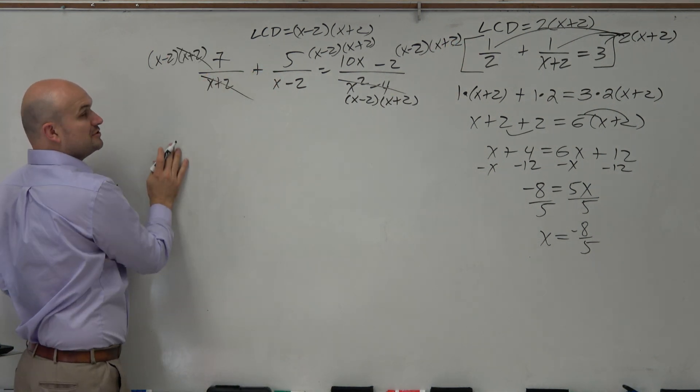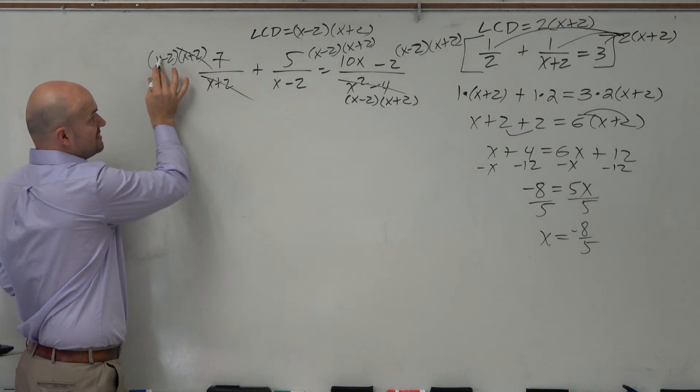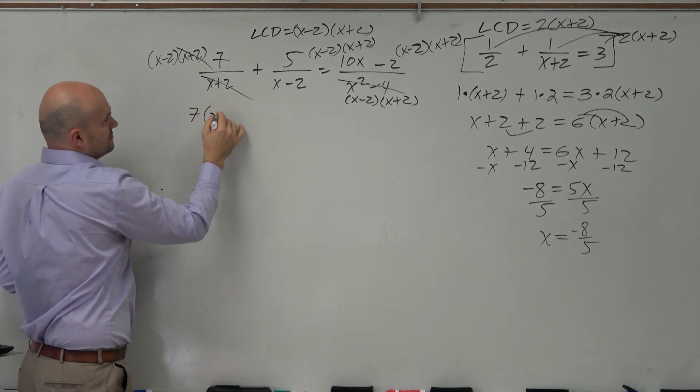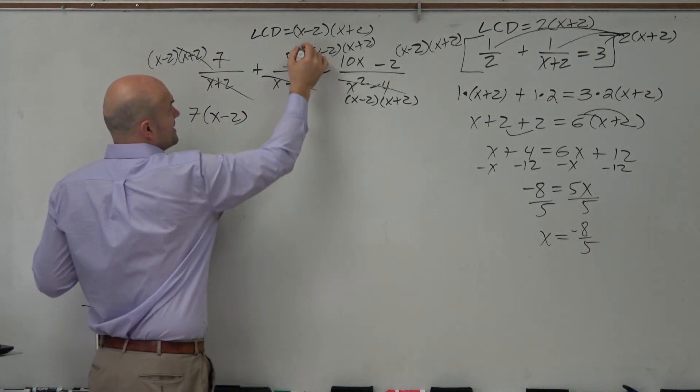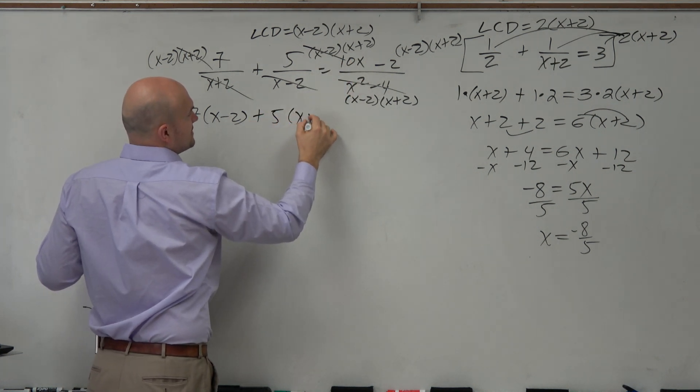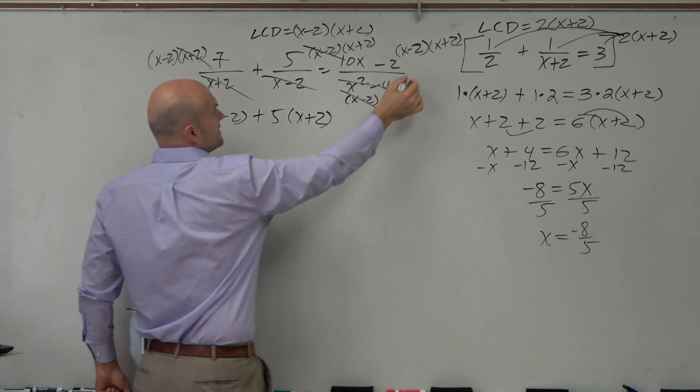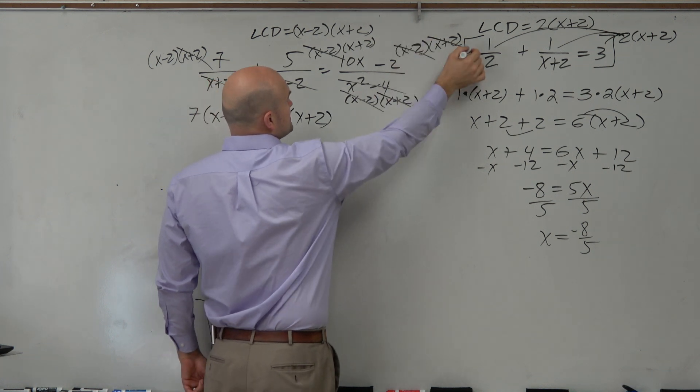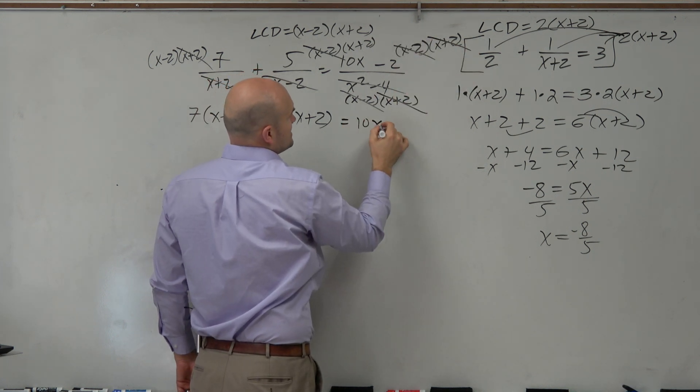Here, we recognize the x plus 2 is divide out. So we're left with a 7 times x minus 2. Here, the x minus 2 is divide out. So we're left with a 5 times x plus 2. Here, the x minus 2 is divide out. The x plus 2 is divide out. And we're left with a 10x minus 2.